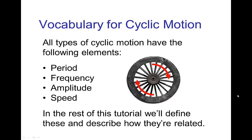There's some vocabulary that's good to understand when it comes to cyclic motion. The following terms — period, frequency, amplitude, and speed — let's take a few minutes to define these and explain the relationship between these four elements.